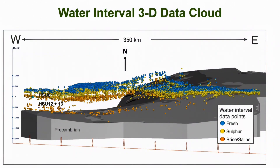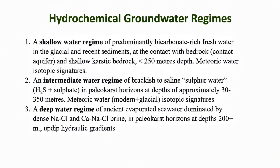This slide is a 3D data cloud of petroleum well water intervals coded by water type. You can clearly see the hydrochemical depth zonation; the gaps are regional aquitards. There are three hydrochemical groundwater regimes in the subsurface of Southern Ontario: a shallow regime of predominantly bicarbonate-rich freshwater in the glacial sediments and shallow karstic bedrock; an intermediate regime of brackish to saline sulfur and sulfate-rich water in paleokarst horizons at approximately 30 to 350 meters; and a deep water regime of ancient evaporated seawater dominated by dense brines in paleokarst horizons at depths greater than 200 meters, with up-dip hydraulic gradients.